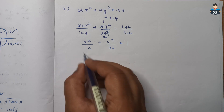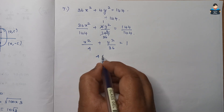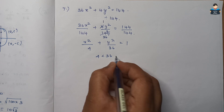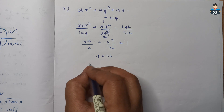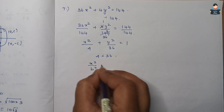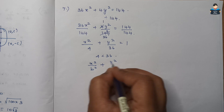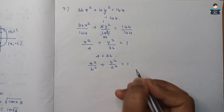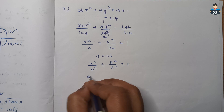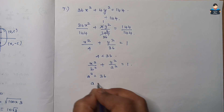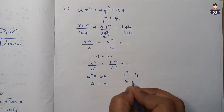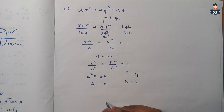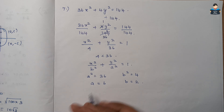Since 4 is less than 36, the standard equation form used is x²/b² + y²/a² = 1. So a² = 36, a = 6, b² = 4, b = 2. The major axis is along the y-axis.